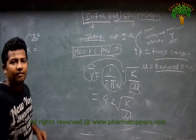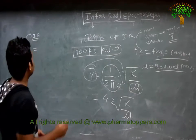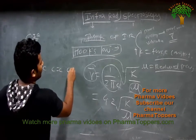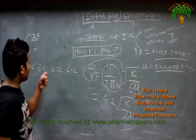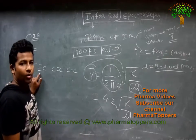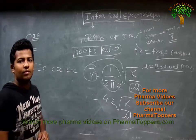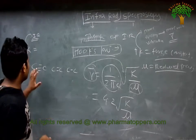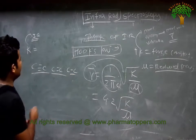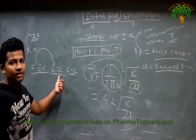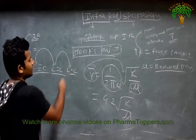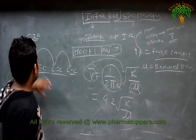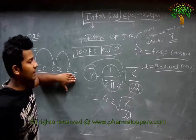See examples: alkyne (C≡C), alkene (C=C), and alkane (C-C) — triple bond, double bond, single bond. The triple bond is stronger than the double bond, which is stronger than the single bond. In case of triple bond, the force constant K is three times more than single bond; for double bond, two times more than single bond.